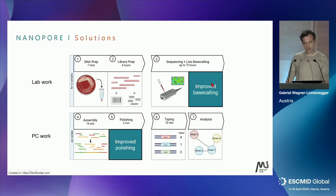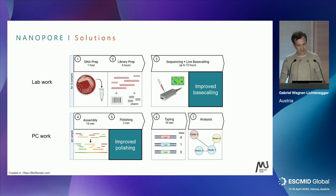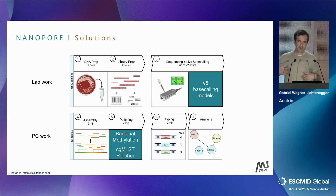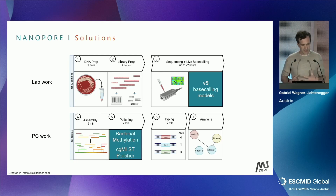One option is improving base calling — there's a lot of machine learning involved in nanopore sequencing, so you can improve the base calling models. There is also post-assembly polishing, where you map back reads to the assembly and use machine learning to correct for nanopore-specific errors. A new base calling model was released by Nanopore, along with a bacterial methylation model for the Medaka polisher. The company developing Seqsphere, which we use for the readout, also programmed a proprietary cgMLST polisher dedicated specifically to this task.